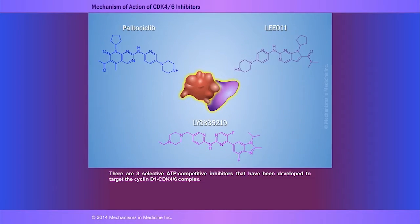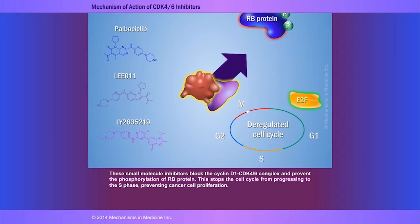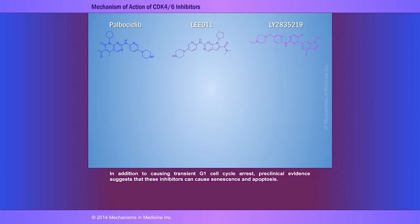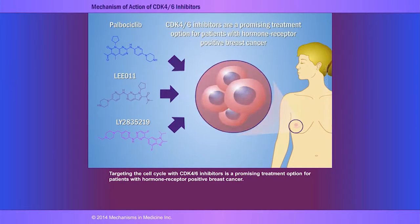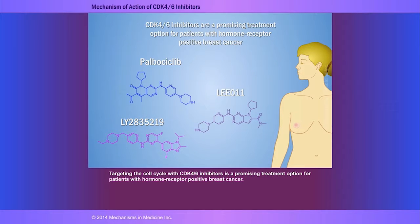There are three selective ATP-competitive inhibitors that have been developed to target the cyclin-D1 CDK4/6 complex. These small molecule inhibitors block the cyclin-D1 CDK4/6 complex and prevent the phosphorylation of RB protein. This stops the cell cycle from progressing to S phase, preventing cancer cell proliferation or growth. In addition to causing transient G1 cell cycle arrest, preclinical evidence suggests that these inhibitors can also cause senescence and apoptosis. Targeting the cell cycle with CDK4/6 inhibitors is a promising treatment option for patients with hormone receptor-positive breast cancer.